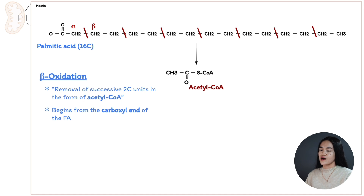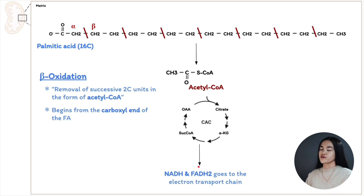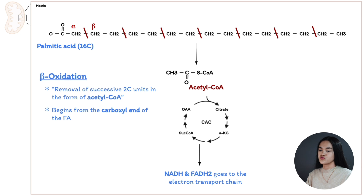Fatty acid oxidation can be broken down into three stages. The first stage is beta-oxidation, where the fatty acid is broken down to produce acetyl-CoA. In the second stage, acetyl-CoA enters the citric acid cycle. And in the last stage, the electrons we capture are transported to the electron transport chain to drive ATP synthesis. Now let's subtract complexity and break down beta-oxidation — the first stage of fatty acid oxidation. Beta-oxidation is the removal of successive two-carbon units in the form of acetyl-CoA, proceeding from the carboxyl end of the fatty acid, with four steps per cycle.